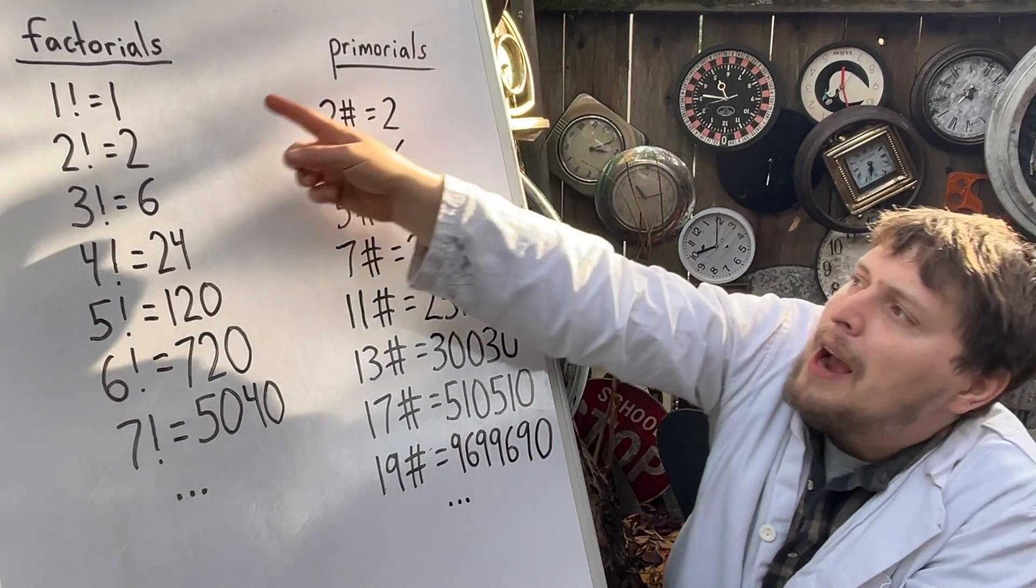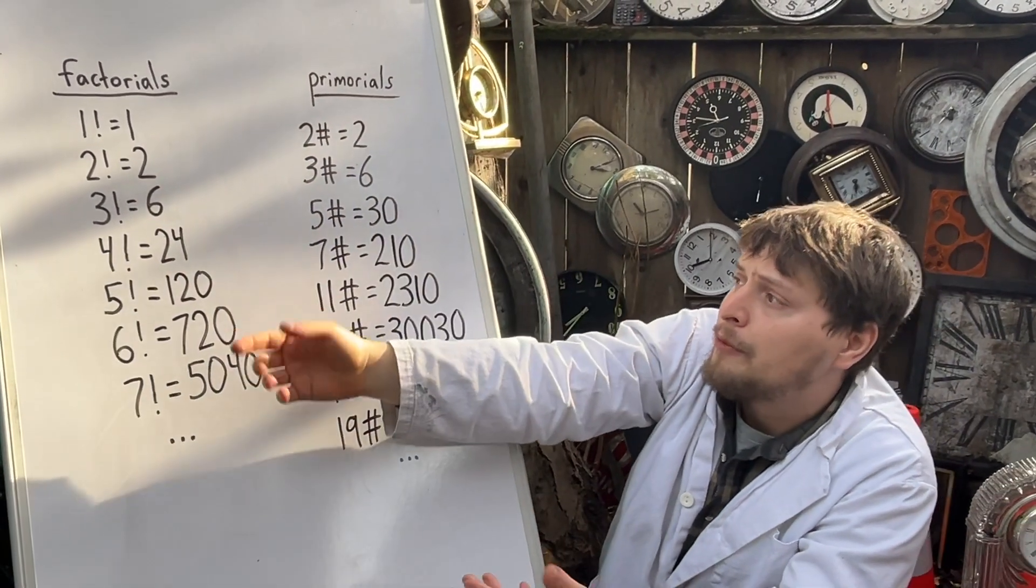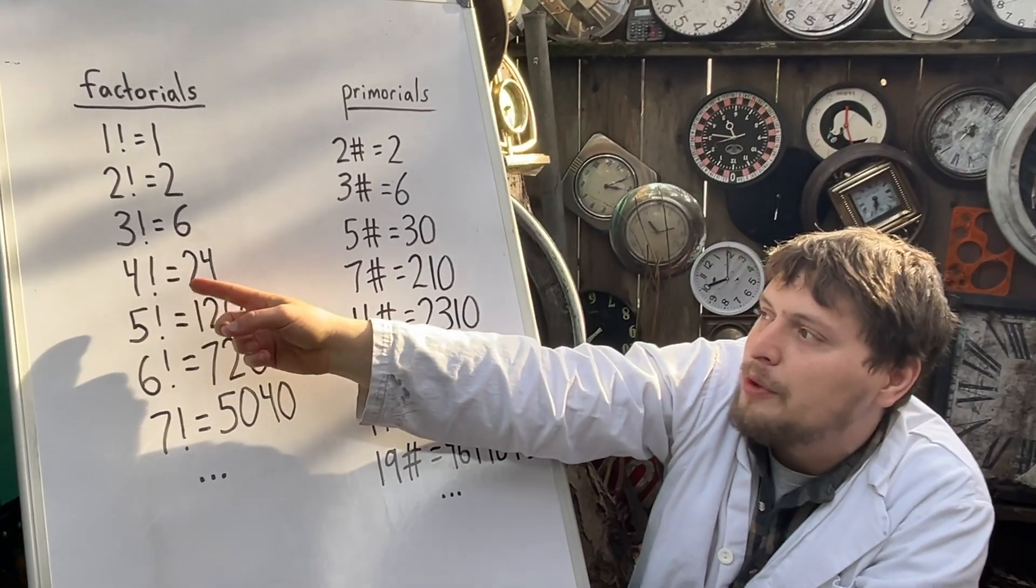And to begin, factorials are defined by multiplying all of the whole numbers up through some point, like 4 factorial is 1 times 2 times 3 times 4, which is 24.